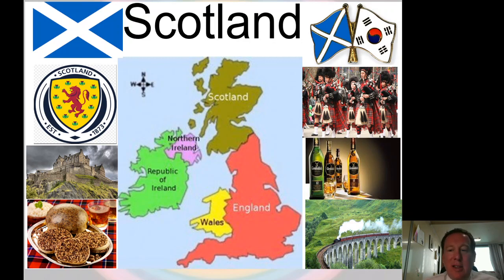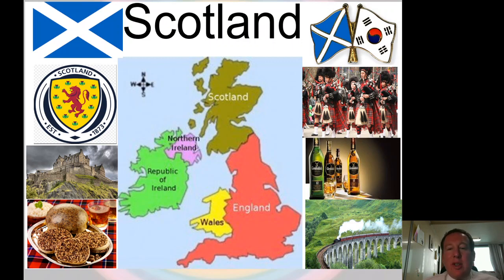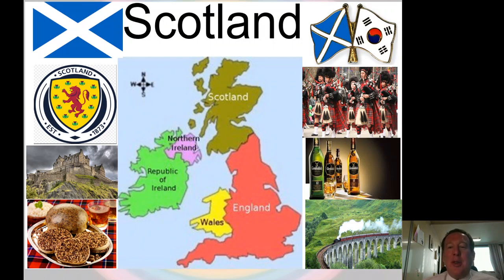In the pictures you can see a little about Scotland — one is the Harry Potter railway, and another is Edinburgh Castle. Scotland is always dark, rainy, and green. Korea always says Korea has four seasons in one year. Scotland has four seasons in one day — we never know what the weather is going to be like. We'll talk more about Scotland in the future.